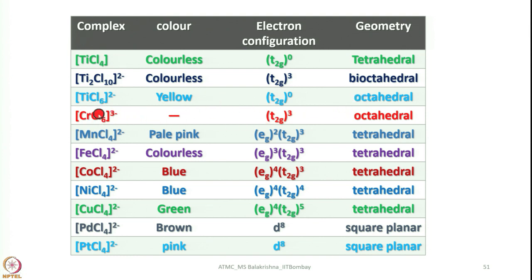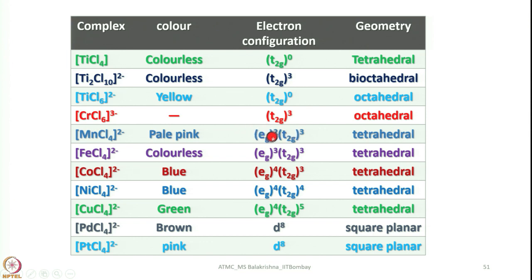For hexachlorochromate, and manganese — pale pink — the pale pink color arises because in tetrahedral geometry the d orbitals split into E and T2 (without the g subscript). With three electrons in the higher-energy T2 system and E lower in energy, all transitions are spin-forbidden, resulting in pale pink. You will understand more when we cover spectroscopic properties of metal complexes.